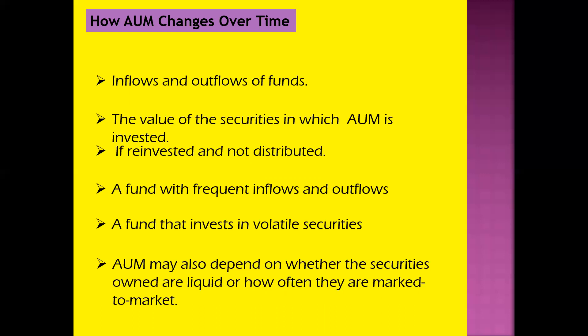The next reason is the value of securities in which AUM is invested. A mutual fund will experience an increase or decrease in AUM when the market price of securities increases or decreases. The price of securities can change in minutes or seconds, as we see in the share market. Additionally, dividends paid by companies in the institution's portfolio also affect AUM — if dividends are reinvested rather than distributed, they increase AUM; if paid out, they decrease it.